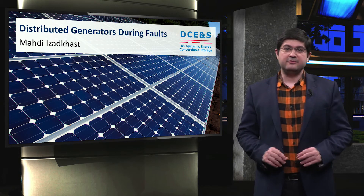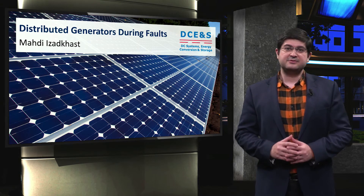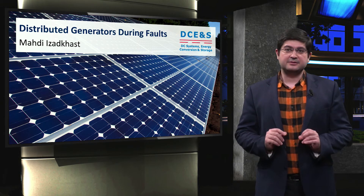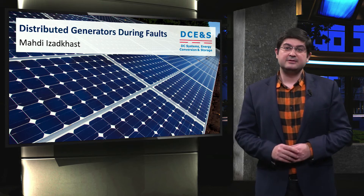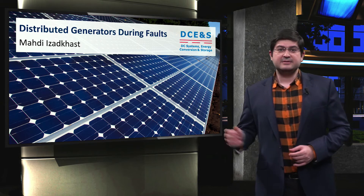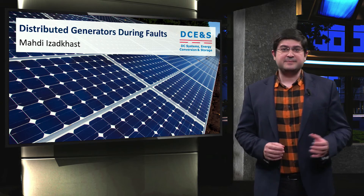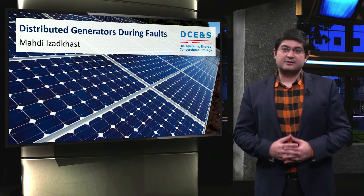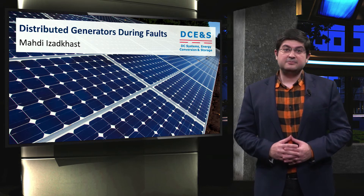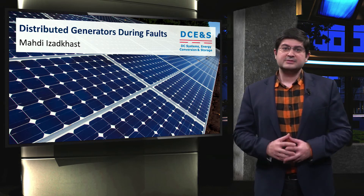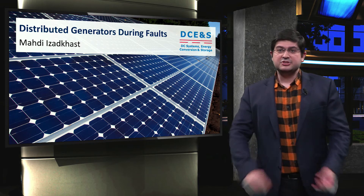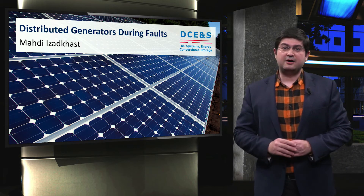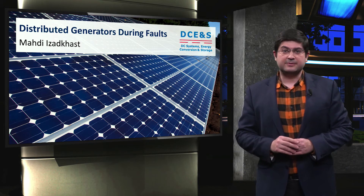During the previous video, we discussed the 3S criteria which include sensitivity, selectivity, and speed. In this video, we will focus on the speed of the protection system and its potential impacts on the operation of distributed generators.